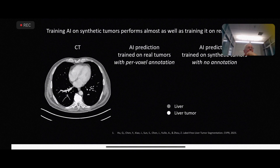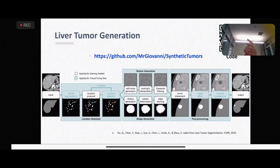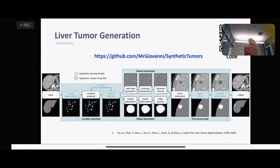The results from this CVPR 2023 paper show that AI predictions trained on synthetic tumours, using semantic segmentation algorithms, perform almost identically to those trained on real tumours. You can improve performance further by using a few real tumours from a small dataset and adding those in as well.